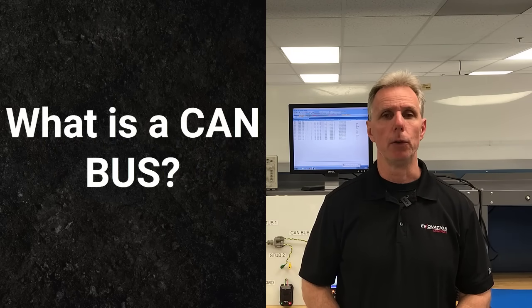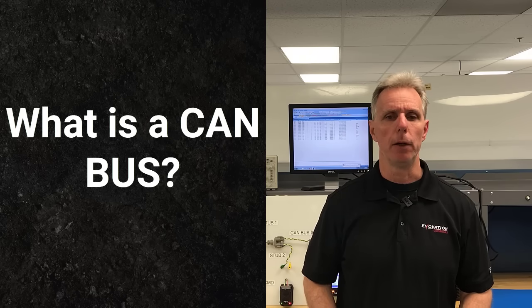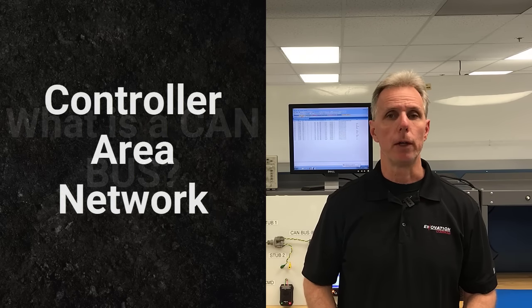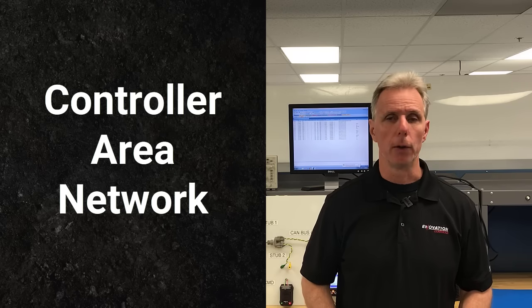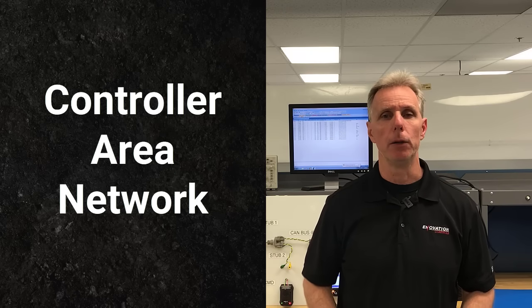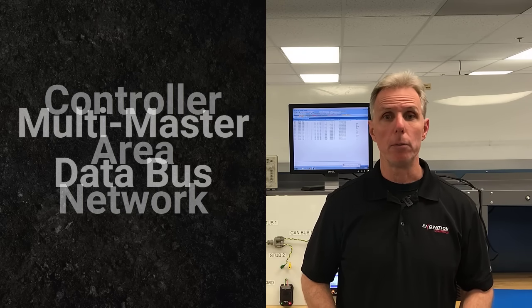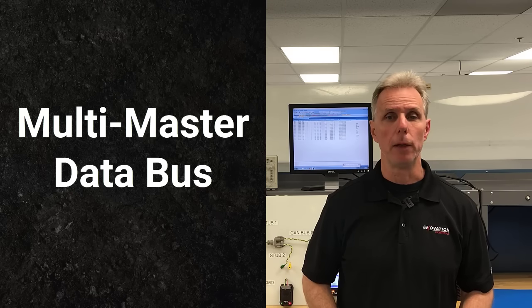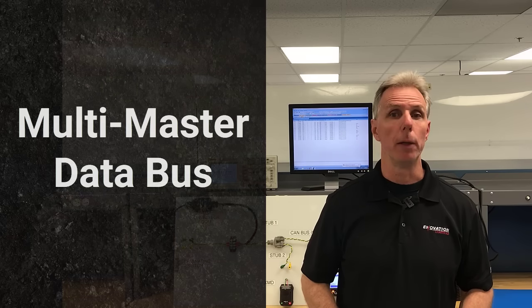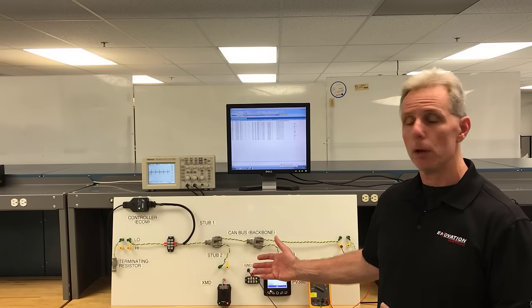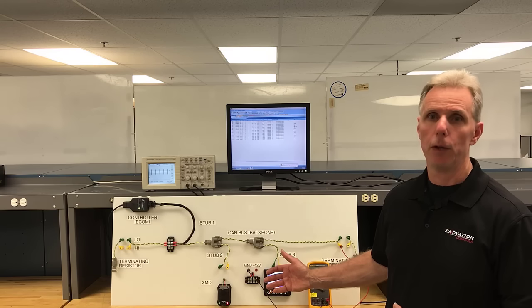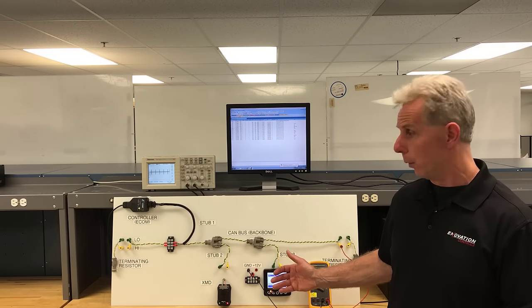Before we begin, we should have a brief discussion on what a CAN data bus is. CAN stands for Controller Area Network, and it's basically a two-wire high-speed data bus that allows multiple devices to communicate with each other. This is a multi-master data bus, meaning any device connected to the network can take control of the bus and transmit data. To help demonstrate these principles, we have a panel behind us with all the major components of a typical CAN data bus.